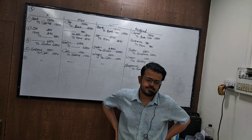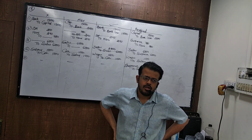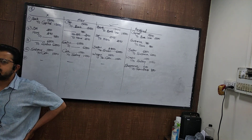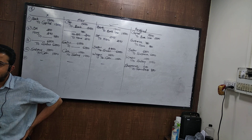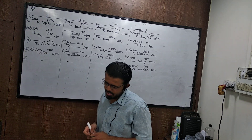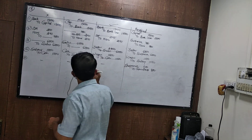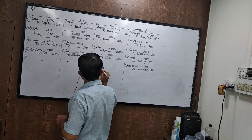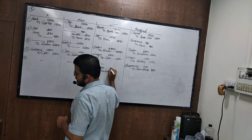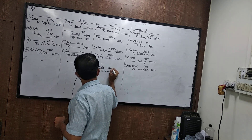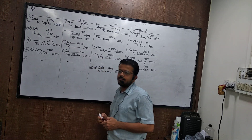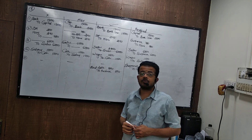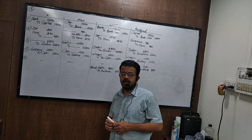Goods purchased 3500 from Ajay were recorded as 35,000 in the purchase book. Many students make a mistake in this part. The correct entry is purchase to Ajay 3500. Both debit and credit were recorded as 35,000 — that is the wrong entry. Correct is purchase to Ajay 3500.